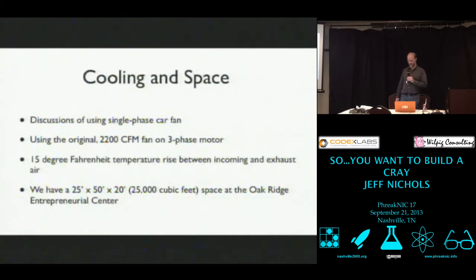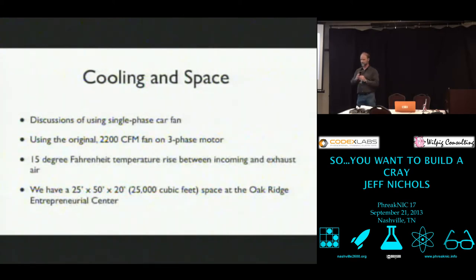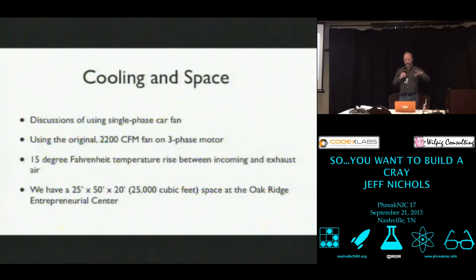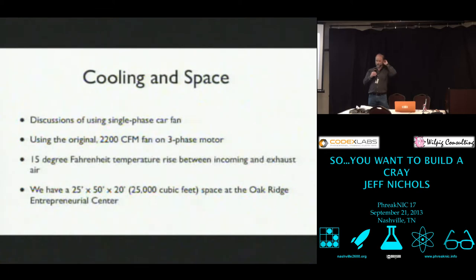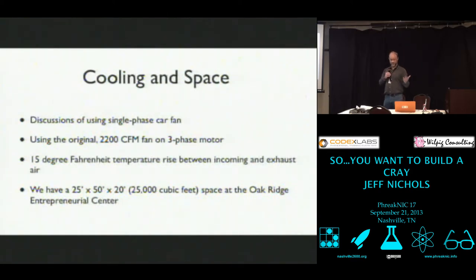Another discussion was how are we going to cool this thing? We could use a single-phase car fan — there were all these crazy ideas. We were able to use the original 2,200 cubic-foot-per-minute fan on a three-phase motor because we did get three-phase power. There is a 15-degree Fahrenheit temperature rise between the incoming and the exhaust air. We have 25,000 cubic feet of space at the Oak Ridge Entrepreneurial Center where we're located, and so we can turn over all the air in the room, heating it up by 15 degrees in 12 minutes.